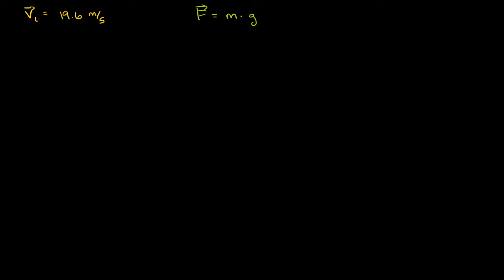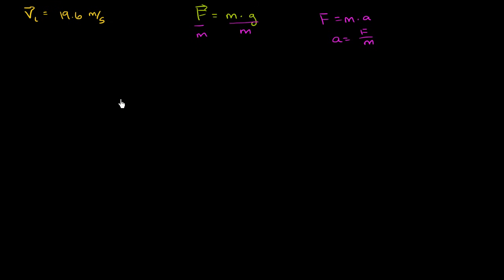If you want the acceleration on Earth, you just divide force by mass, because we have force equal to mass times acceleration. Dividing both sides by mass, on the left-hand side you get acceleration, and on the right-hand side you get the same quantity g.